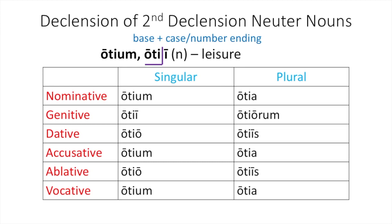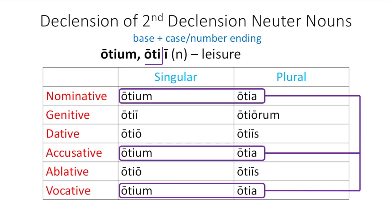The nominative plural will have that nominative plural neuter A: ota. The genitive plural oturum has the O-R-U-M ending. The dative plural has the second declension I-S ending. The accusative plural ota looks exactly like our nominative plural ota with that neuter plural A. Notice how we have the exact same forms in our nominative, accusative, and vocative singular, as well as the exact same forms in our nominative plural, accusative plural, and vocative plural forms. That is thanks to our wonderful neuter rule.